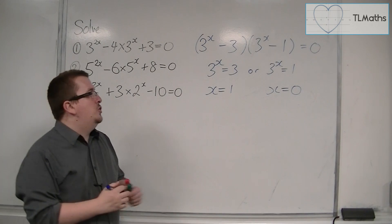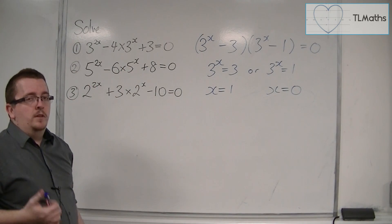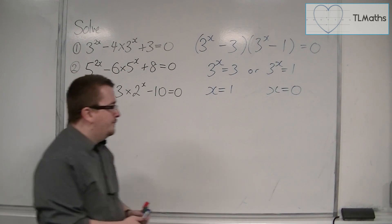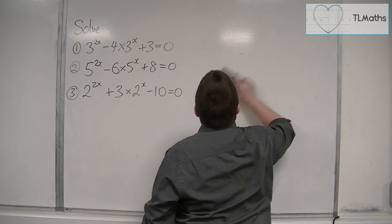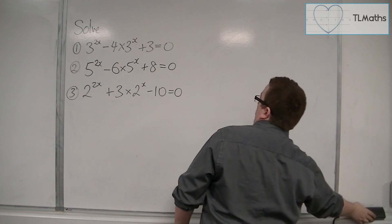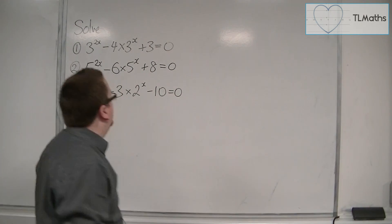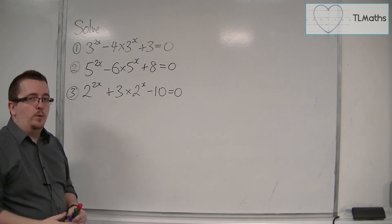And those are the two solutions for that quadratic equation. So let's have a look at the second one. We've got 5 to the 2x take away 6 times 5 to the x plus 8 is equal to 0.